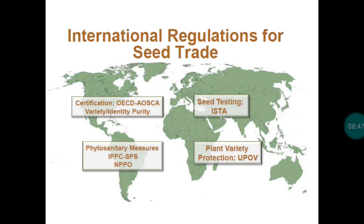To recollect: OECD and AOSCA are responsible for the certification system. Once seeds are certified under OECD or AOSCA, we can export to member countries. ISTA is responsible for developing seed testing protocols and sampling procedures; ISTA-accredited laboratories issue certificates enabling export. Phytosanitary measures are also very important for export, and UPOV handles varietal protection systems.